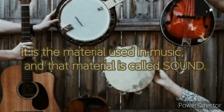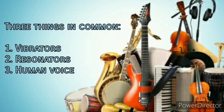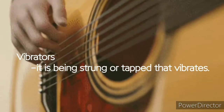The medium of music is the material used in music, and that material is called sound. This musical sound or tones are produced by human-made instruments or by human voice. There are three things in common produced by music. These are vibrators, resonators, and human voice.